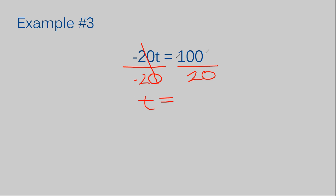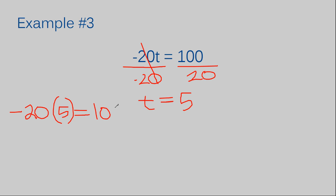When you use inverse operations, it always works out so that the repeated numbers cancel. So 100 divided by 20 gives you 5, meaning T equals 5. Now, you can always take the value of your answer and plug it back into your original equation to check. If I rewrite the problem as negative 20 times 5 — substituting the value of T — I should get 100.